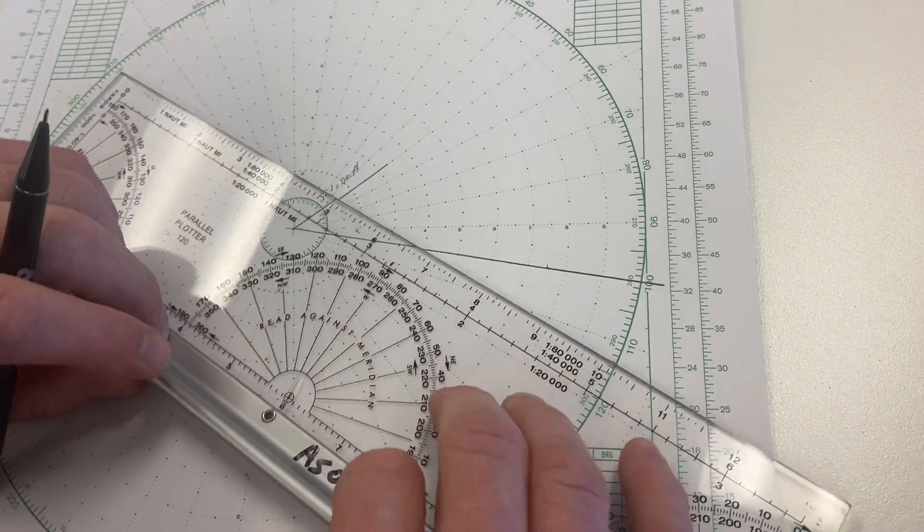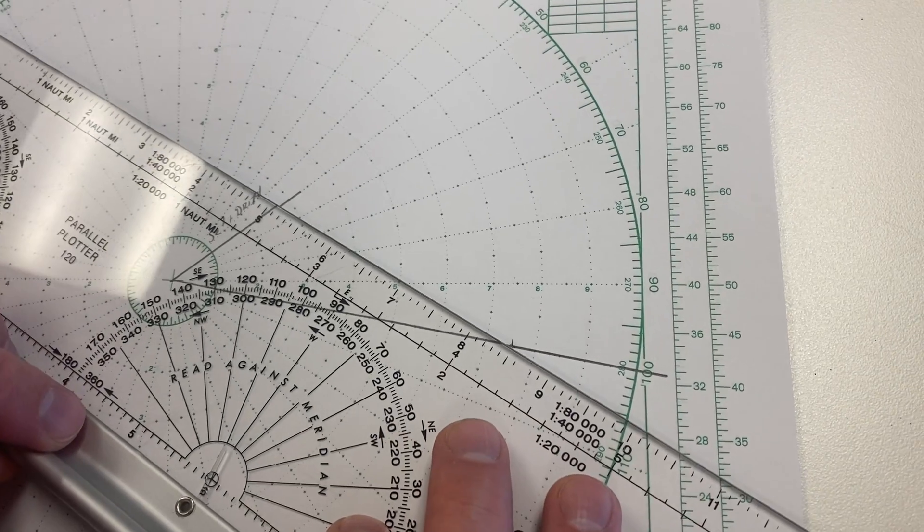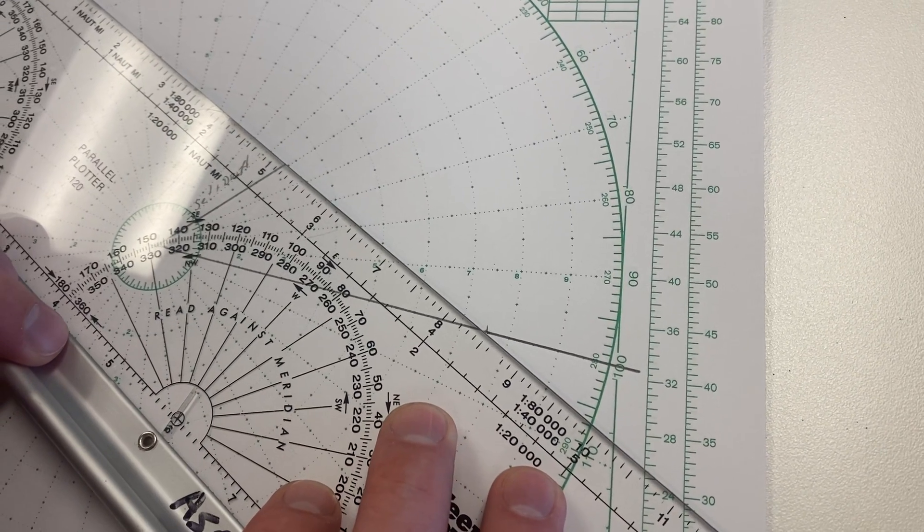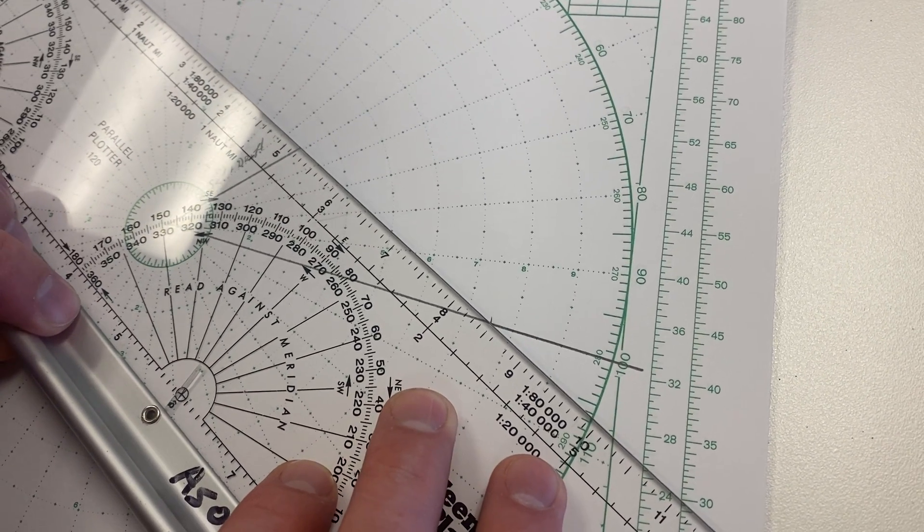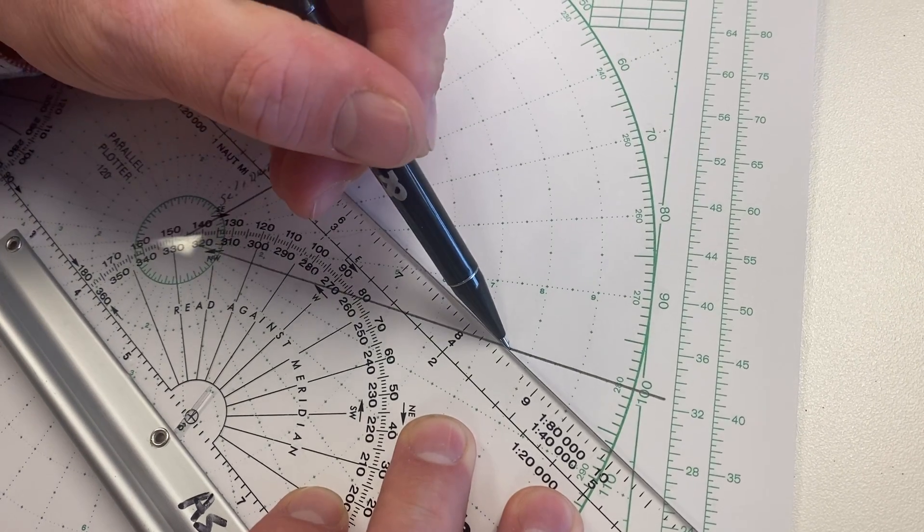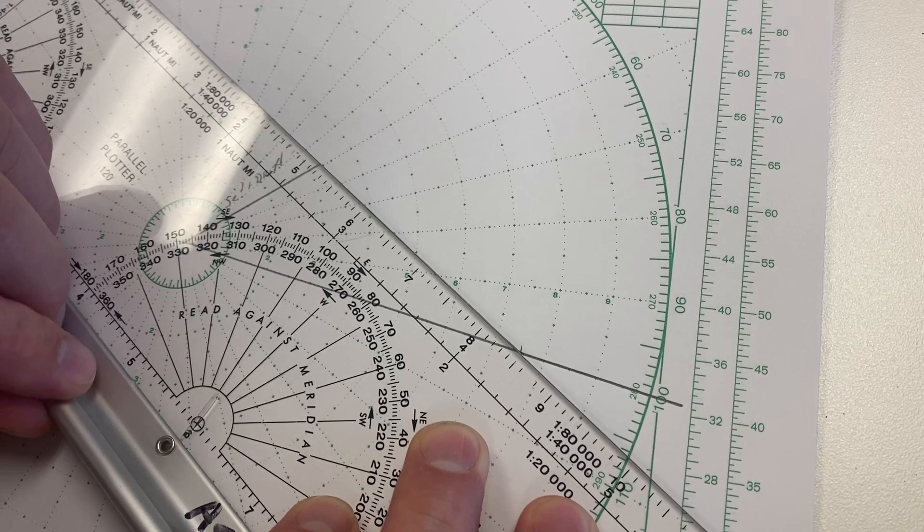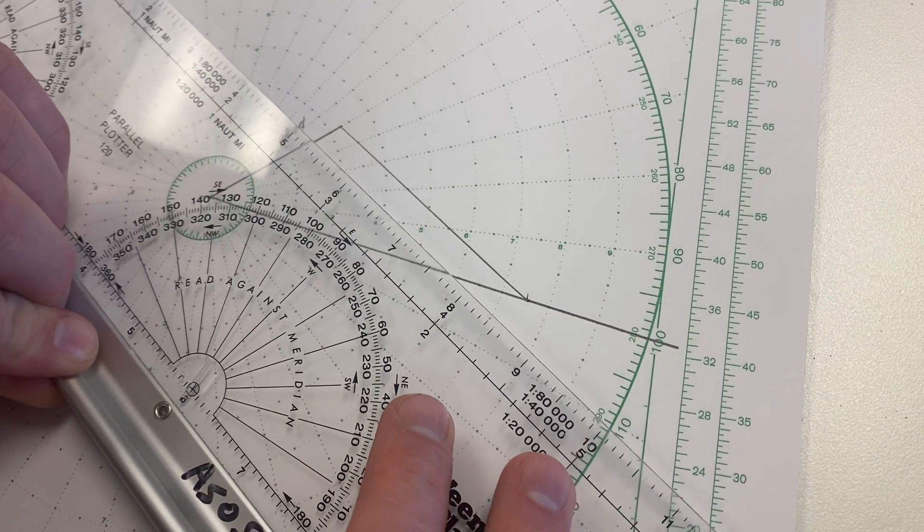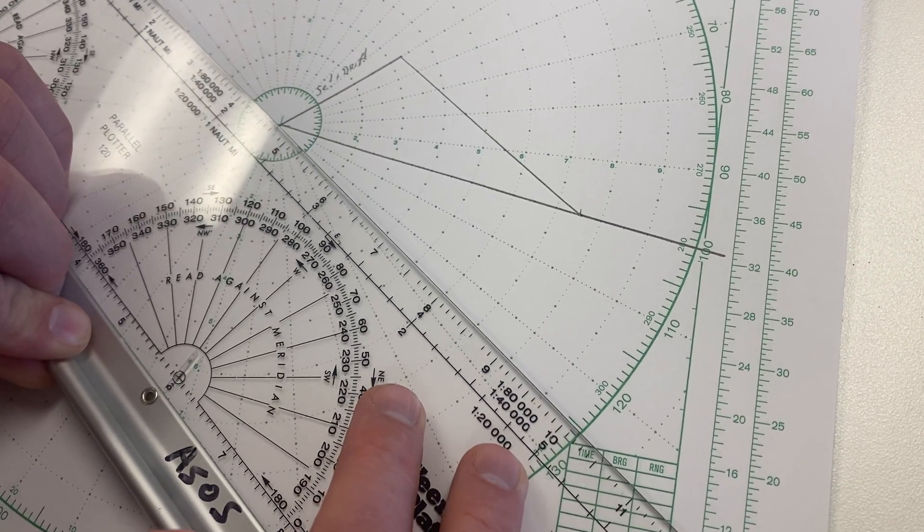Now we're going to take our parallel plotter. We're going to line up between the end of set and drift and that mark that we made. Now you can either draw a line or you can just roll this back. I'm going to draw a little line right here. I'm going to take this line, and I'm going to lift and roll this back to the center.